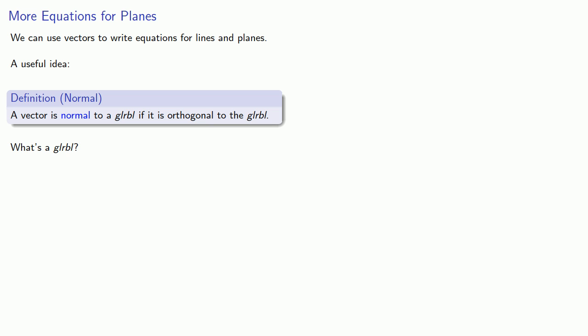If you've watched the video that I posted on Stardate 2437.6... wait, I haven't posted that video yet. Actually, this idea of a glurbal is completely generic. A glurbal is anything a vector can be orthogonal to. So we can say that a vector is normal to another vector, to a plane, to a line, to a curve, to anything at all.